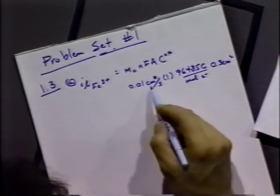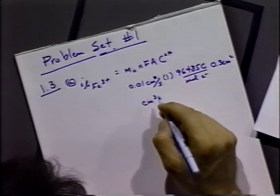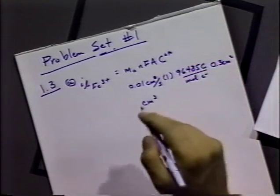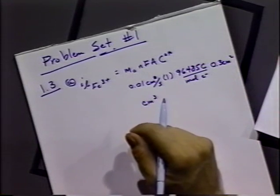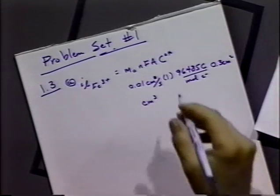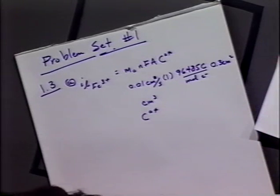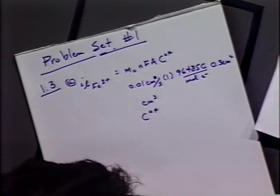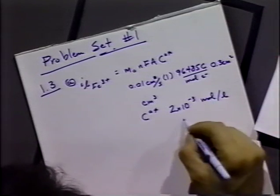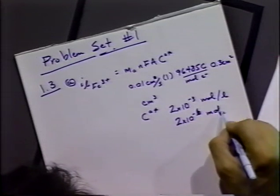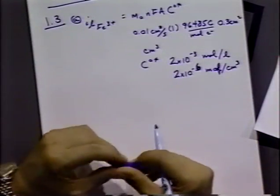One tricky thing: when you check the units, we have cubic centimeters in the system, so we need the bulk concentration in moles per cubic centimeter rather than moles per liter. C₀* for iron 3+ is 2×10⁻³ moles per liter, but converting gives 2×10⁻⁶ moles per cubic centimeter — there's a factor of 10³ in that conversion.